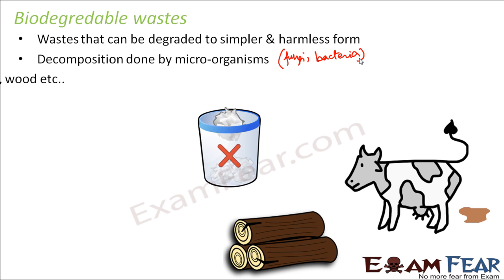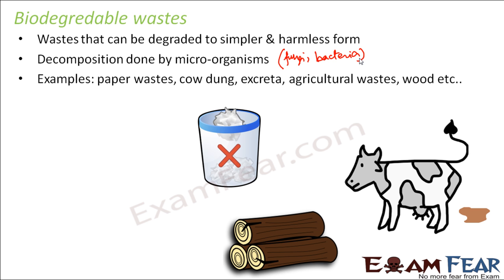Examples of biodegradable wastes are paper wastes, cow dung, excreta, agricultural wastes, wood, etc. All these things, even if placed under the land or kept somewhere for years, will get biodegraded by the action of microorganisms. However, that will give out a foul smell due to microbial action, but at least they will get converted into harmless forms.